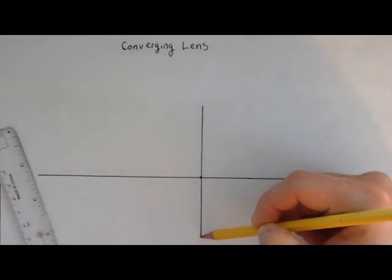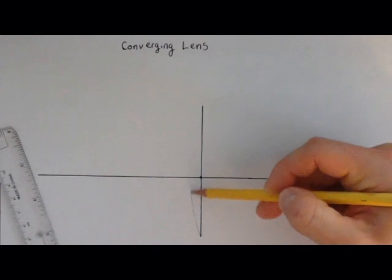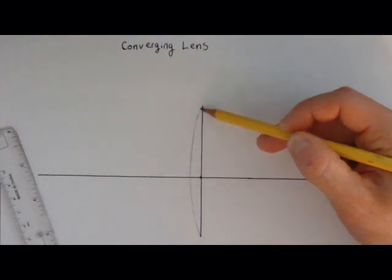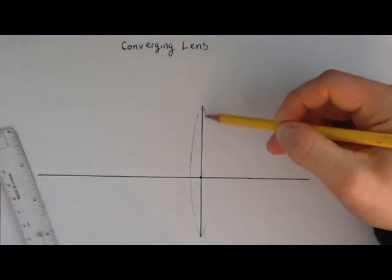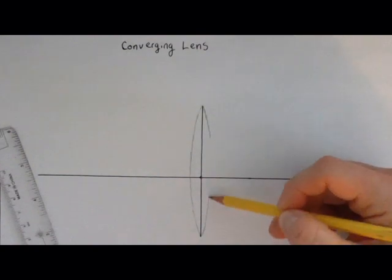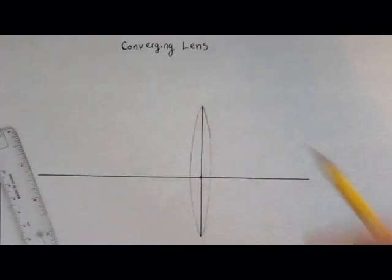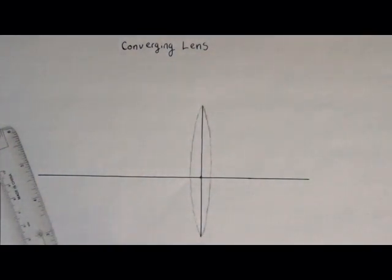We're converging lens, so we're thicker in the middle. So my lens looks something kind of like this. Okay, so thicker in the middle than it is on the edges.